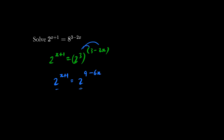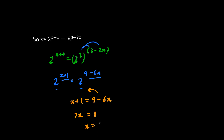The bases are the same, and so must be the exponents. So we have x plus 1 equals 9 minus 6x. We throw the 6x over so it becomes positive 6x. 7x equals 8, so x equals 8 over 7.